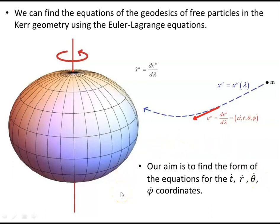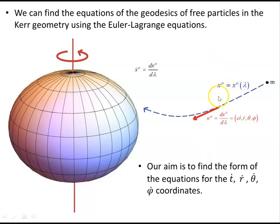We can find the equations of the geodesics of free particles in the Kerr geometry using the Euler-Lagrange equations. Our aim is to find the form of the equations for t dot, r dot, theta dot, and phi dot coordinates. The path is described in terms of coordinates t, r, theta, and phi — with t scaled to ct — all parameterized in terms of an affine parameter lambda.